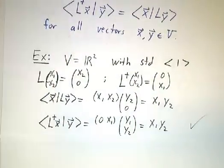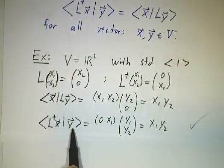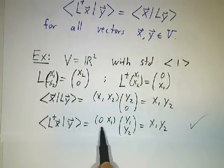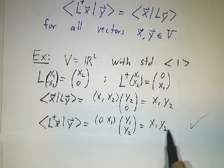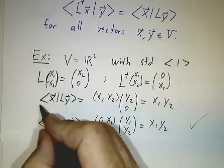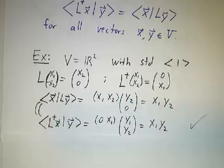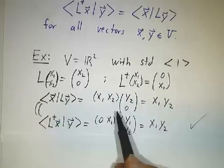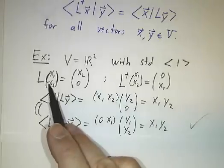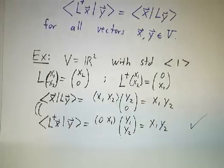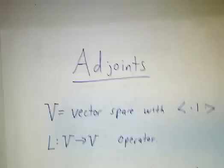On the other hand, L-dagger x inner product with y: L-dagger x gives you (0, x₁) times (y₁, y₂), which also gives you x₁y₂. So these two things are equal. And since this works no matter what x is and no matter what y is, this is the adjoint of this operator. Okay, so that's the definition.